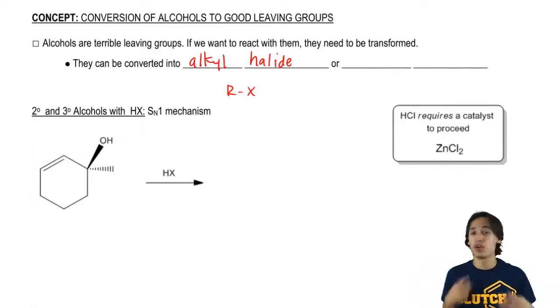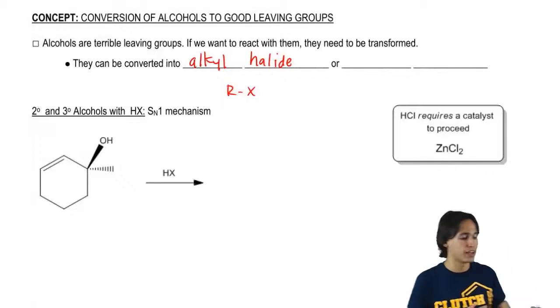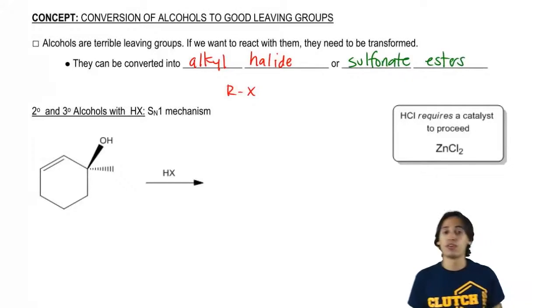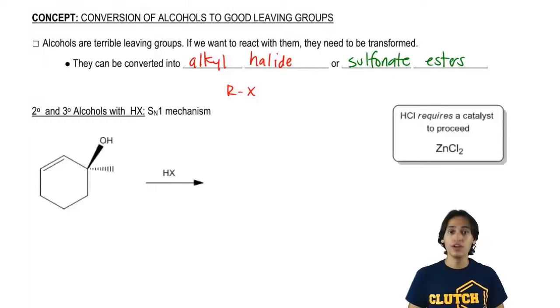But another option that we also have that we'll discuss in a little bit is sulfonate esters. Now, you might have learned already that sulfonate esters make great leaving groups. I actually have talked about that before. But now what we're going to learn is how to actually turn an alcohol into a sulfonate ester so that it can become a great leaving group.